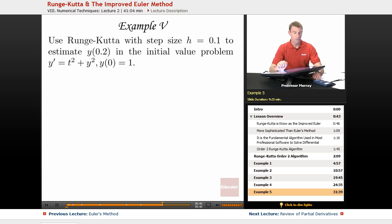In Example 5, we're going to use Runge-Kutta with step size h equals 0.1 to estimate y of 0.2 in the initial value problem y prime equals t squared plus y squared, and y of 0 equals 1.